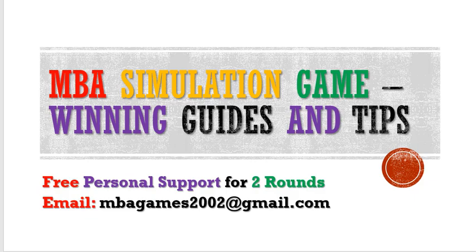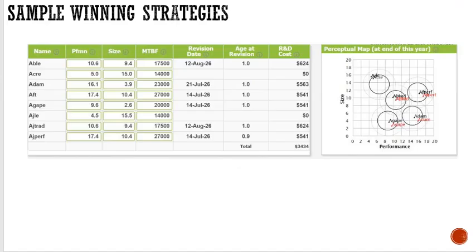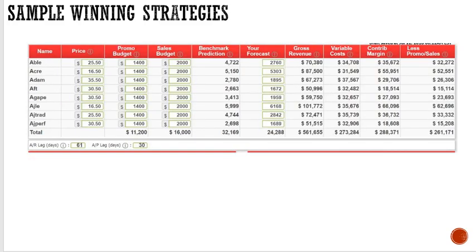This video explains the decisions for Capsim Capstone Round 2, version 2018 update, with new winning guide tips. You should find the Round 1 video as well. With this Round 2 winning guide, you can see the overview of the IND strategy. We can win the game with very high results, having eight products across five segments — low-end, traditional, performance, high-end, and size — all selling well with good net profit.